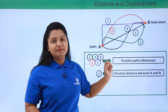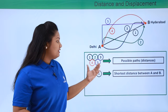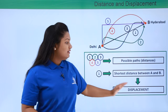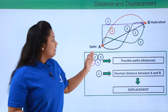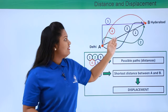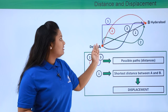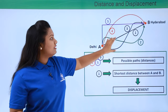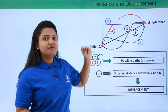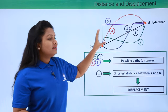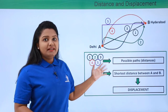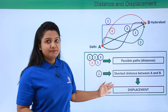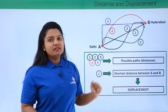Path one is the shortest distance between points A and B. Such paths which are shortest are termed as displacement. So path one is called the displacement, which directly connects point A to point B. All of the other paths — two, three, four, and five — only denote the distance. Now I think you are pretty clear about the difference between distance and displacement.